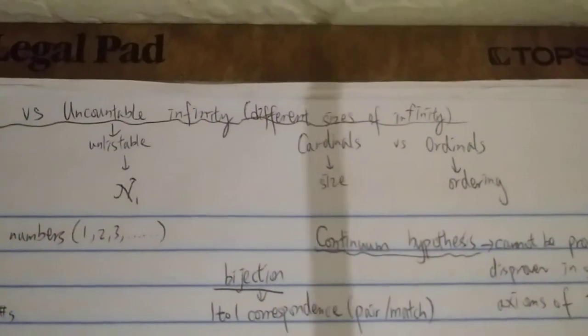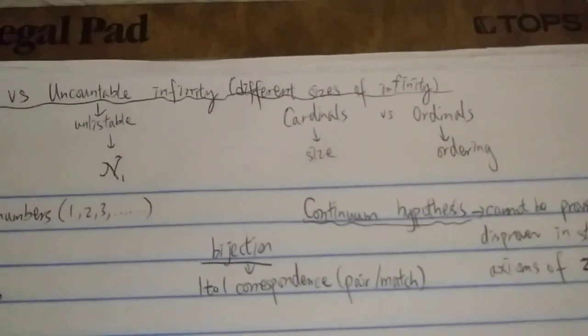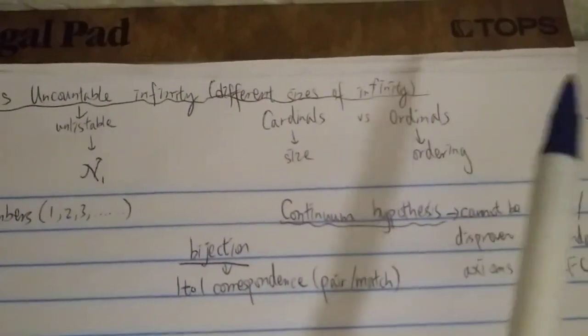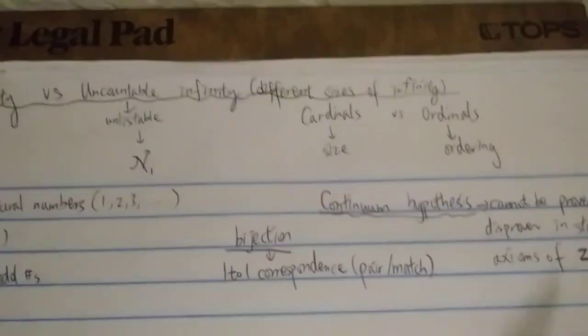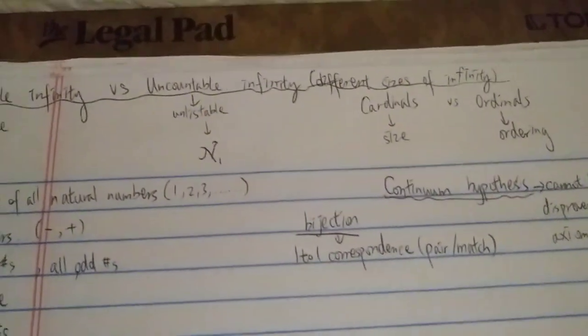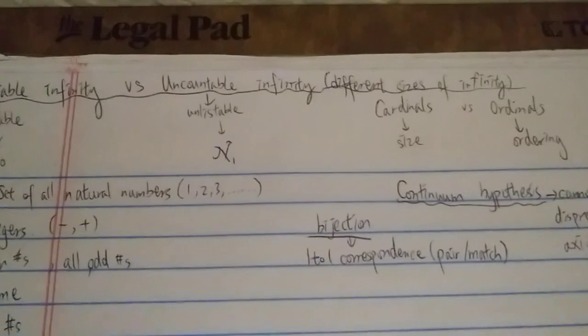Cardinals — we're talking about sizes, or how many things are in a set. Ordinals is just ordering: first, second, third, fourth. So we're going to focus on cardinals, which I think most people are more interested in.